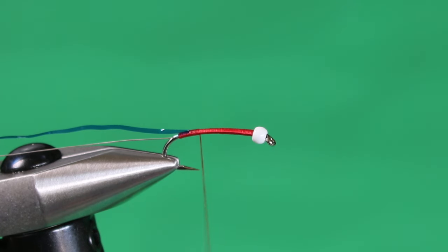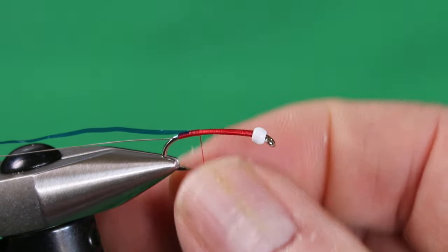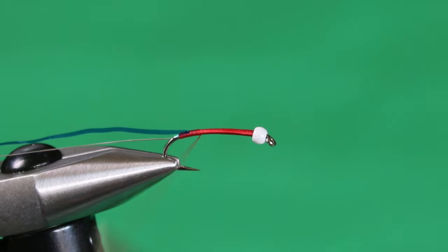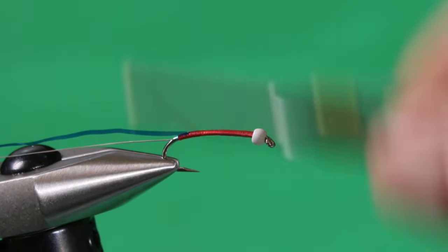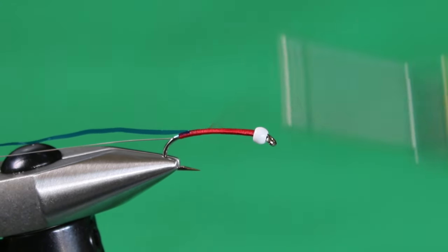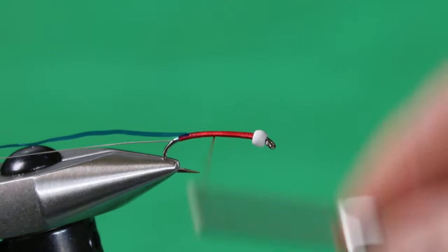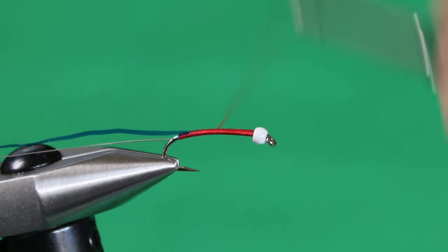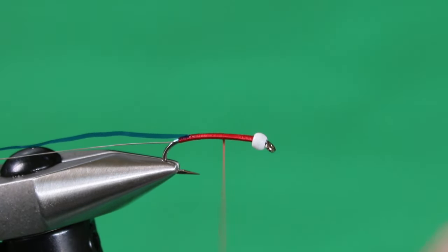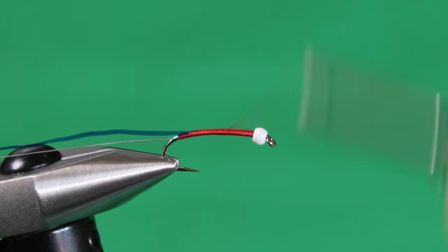Now we're just going to build up the thread underbody by spinning counterclockwise. You can use your thumb and forefinger to further flatten the wraps, and one wrap right next door to the other and build up a nice taper.